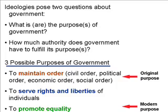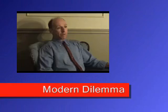The third purpose of government is to promote social and economic equality among members of society. This modern purpose of government is an end which Western governments have undertaken over the last 100 years or so. However, just as we noted an inherent tension between order and liberty, we also acknowledge the conflict between equality and freedom. The more authority an ideology concedes to government to promote social and economic equality, the more individual rights and liberties tend to be restricted, particularly property rights. This conflict is the modern dilemma of government.